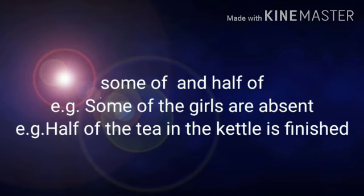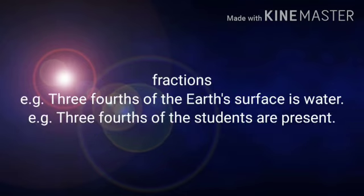When we use 'some of' and 'half of' with countable nouns, then it takes a plural verb. For example, 'some of the girls are absent.' Here, girls are countable, so we took a plural verb. And in the next sentence, 'half of the tea in the kettle is finished.' Here, tea is an uncountable noun, that's why we took 'is' as a singular verb for it.